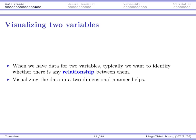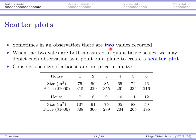The last graph we want to introduce is used to visualize the relationship between two variables — you may have already guessed: the scatter plot. Sometimes we have data where each observation has two values. For example, we collected information about 12 houses and measured their sizes and prices. We may want to get some idea about whether there is any relationship — does a larger size imply a higher price?